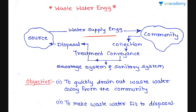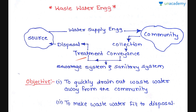The main objective of wastewater engineering is to quickly drain out the wastewater away from the community — we need to quickly drain it out, then treat it, and then send it to the source or disposal. The next objective is to make the wastewater fit for disposal, which is the treatment process. These are the two main objectives.